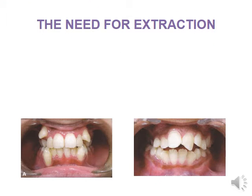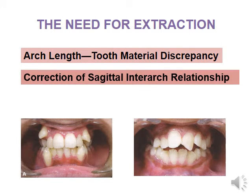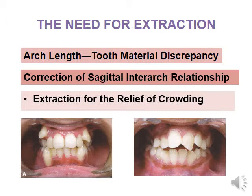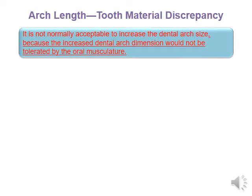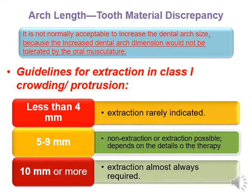The need for extraction. We go for extraction in cases of arch length–tooth material discrepancy, correction of sagittal inter-arch relationship, and extraction for the relief of crowding. It is not normally accepted to increase the dental arch size because the increased dental arch dimensions would not be tolerated by the oral musculature. Guidelines for extraction in Class 1 crowding/protrusion: less than 4 mm — extraction is rarely indicated; 5 to 9 mm — non-extraction or extraction is possible depending on the details of therapy; more than 10 mm — extraction is almost always required.